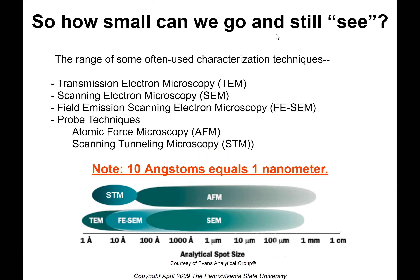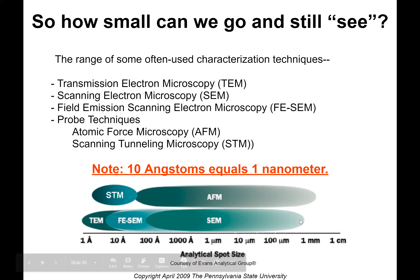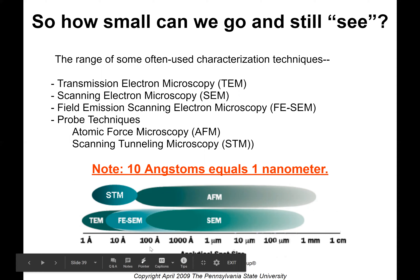So how small can we go and still see? This slide was created in 2009, so I honestly don't know if it's still accurate, but at that time the TEM — transmission electron microscope — could see down to approximately one angstrom. Ten angstroms is approximately one nanometer, so even below one nanometer. The SEM, which I actually used to use, is in the 100 angstroms or 10 nanometers to about one millimeter range — it's on the bigger side. So at the time of this slideshow, a TEM could see at one angstrom.